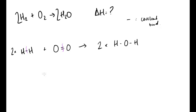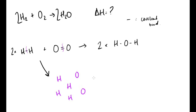Breaking the two H–H bonds gives four hydrogen atoms, and breaking the O=O double bond gives two oxygen atoms. Those same atoms can then be reassembled into two water molecules. The energy change for breaking bonds and the energy change for making bonds are then added together to find the overall enthalpy change — and we need a table of average bond dissociation energies to get the numbers.